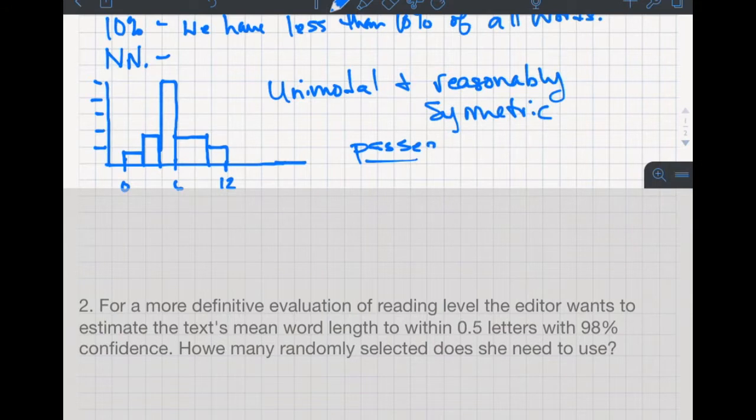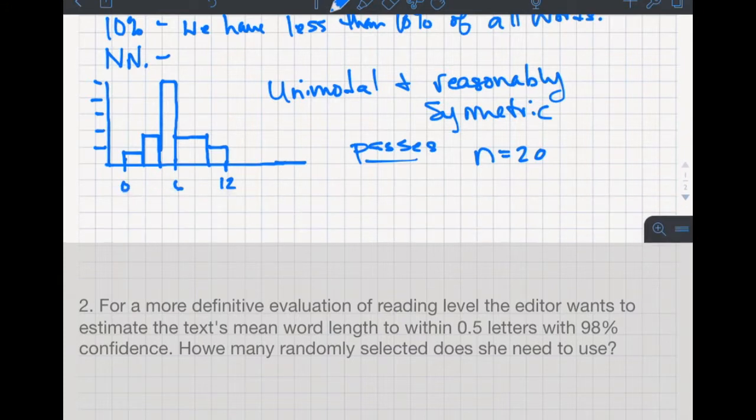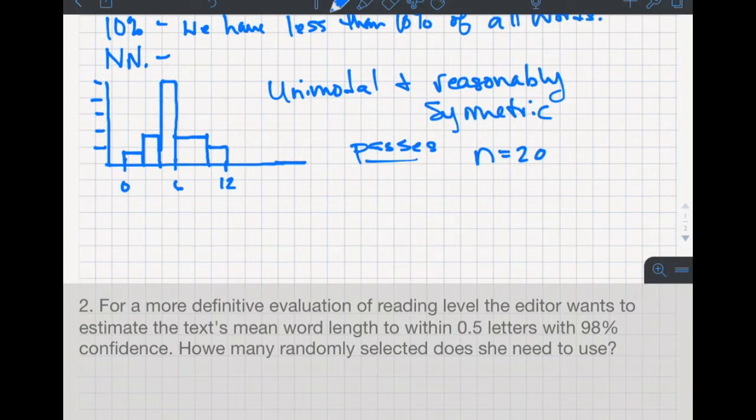Because it's unimodal and reasonably symmetric, it passes the nearly normal condition. We have a sample size of 20, so n equals 20. If we had had some slight skewness or any presence of outliers, we would have had to stop this investigation because our sample size wouldn't have passed the nearly normal condition.